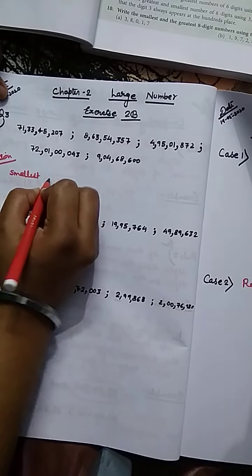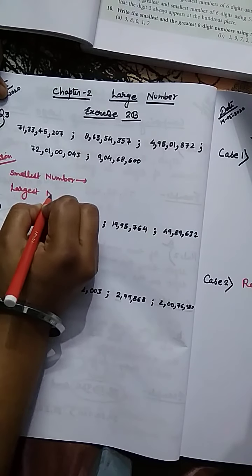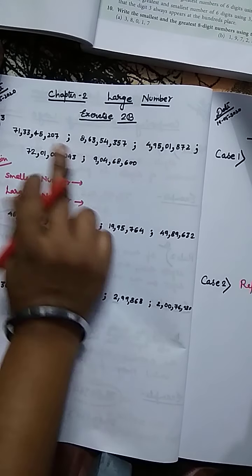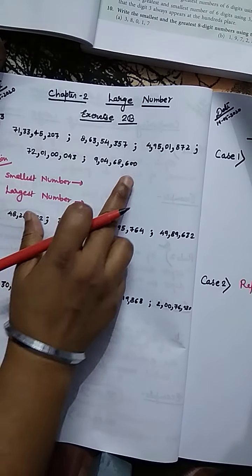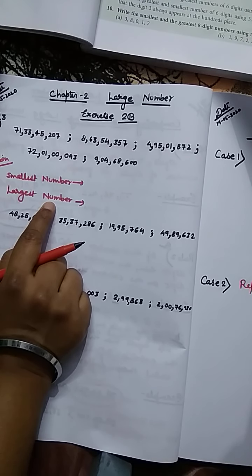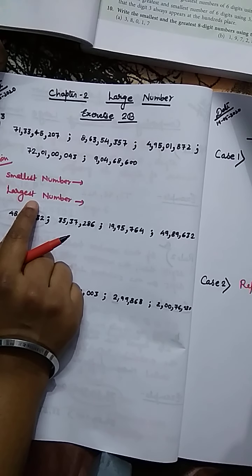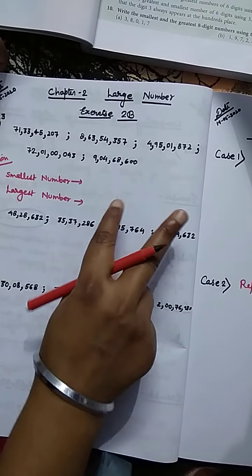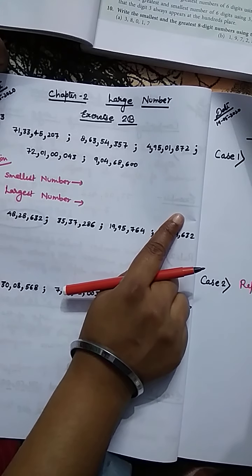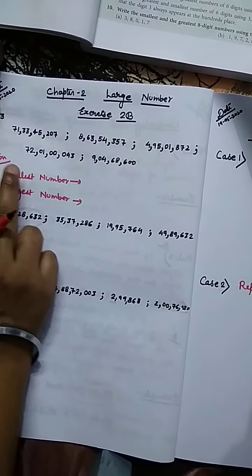So we have to find out the smallest number and the largest number. For A — smallest number and largest number. To find the smallest number, we check which given number has the fewest digits. The number with the most digits will be the largest. If two numbers have the same number of digits, then we apply rule 2 and compare the first digit from the left side.